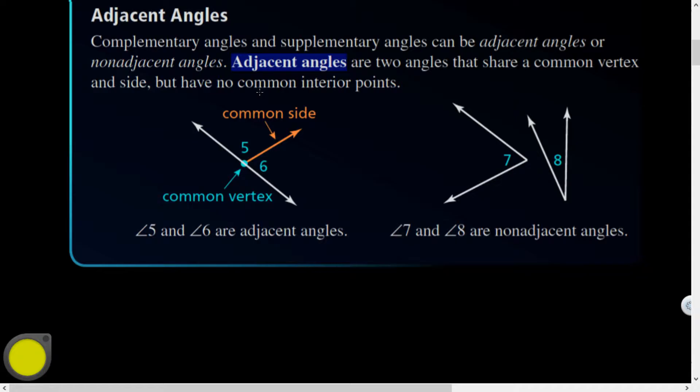Also, here's a concept of adjacent angles. Adjacent angles are when they have a common vertex and side, but no common interior points. So they're just like side by side, they're connected back to back, they're buddies.